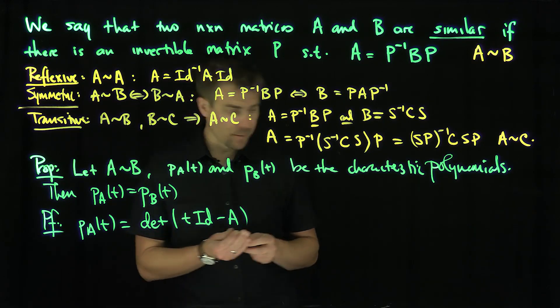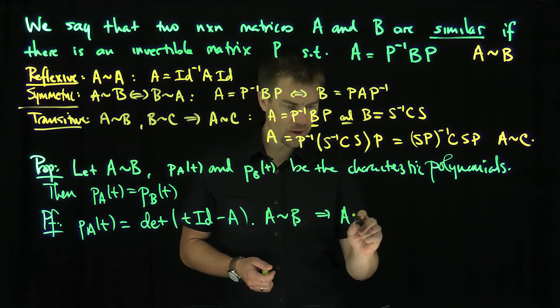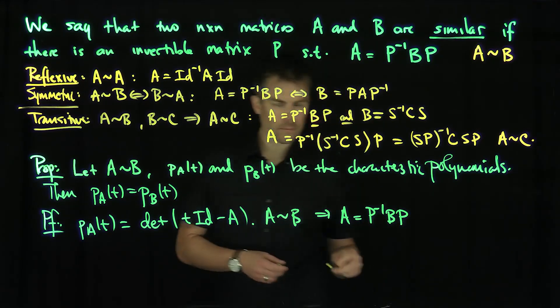But now what I'm going to do, I know that A is similar to B. Since A is similar to B, that says that A equals P inverse B P.